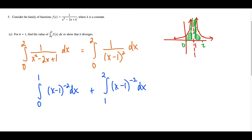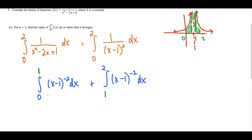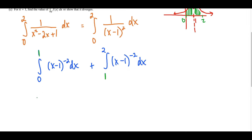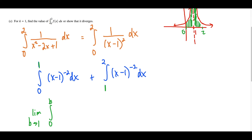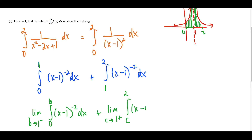The problem here is at x equals 1, so these are the values we have to replace when we set up our limits. We replace the upper limit of the first piece with a variable B, taking the limit as B approaches 1 from the left, giving the integral from 0 to B of x minus 1 to the negative 2. On the interval from 0 to 1, we're approaching 1 from the left side. For the second piece, we use the letter C for the lower limit and take the limit as C approaches 1 from the right, giving the integral from C to 2 of x minus 1 to the negative second power.